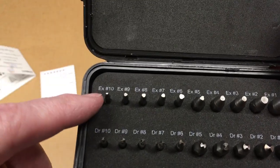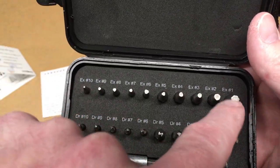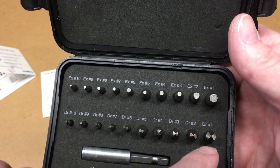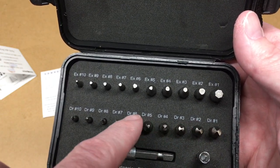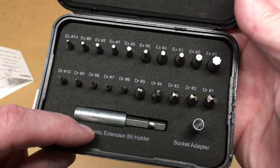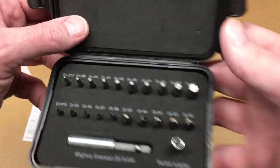These are all the extractors. We have one through ten. And we have one through ten drill bits. Then we have the magnetic bit extension and the socket adapter.